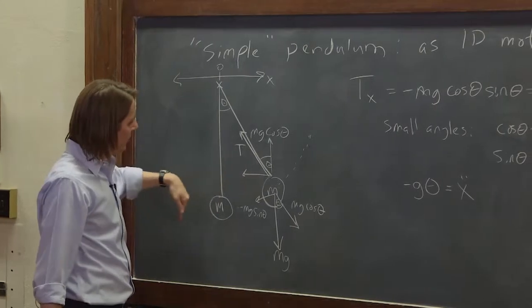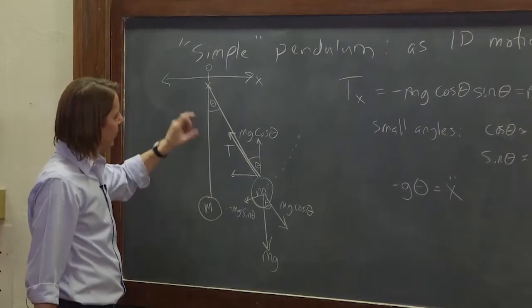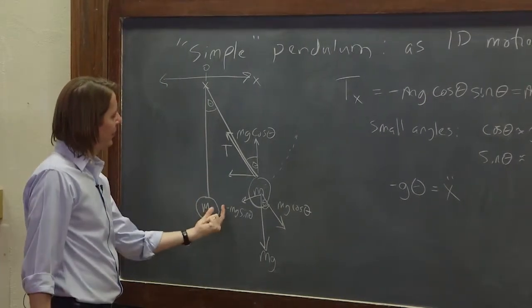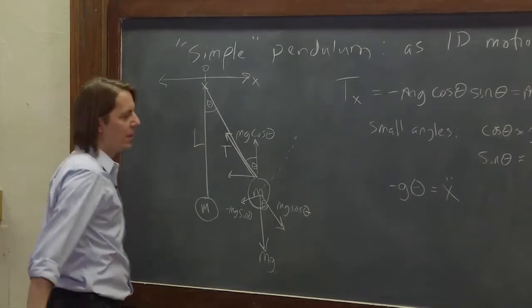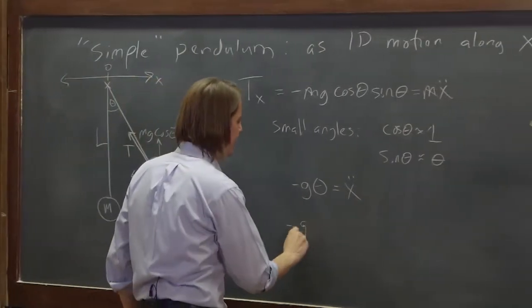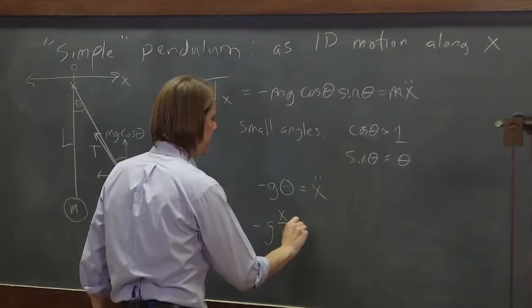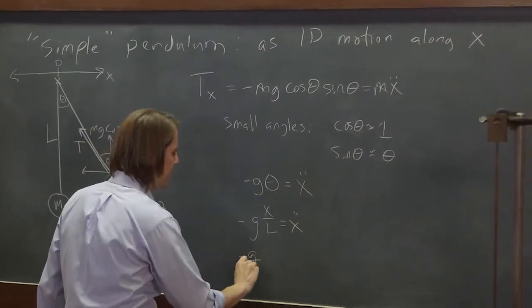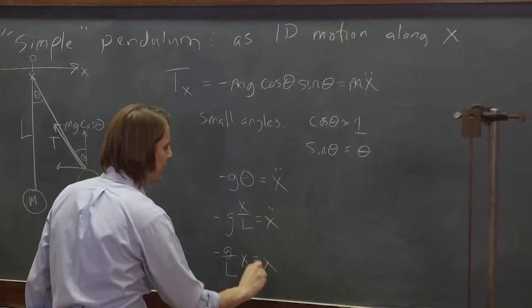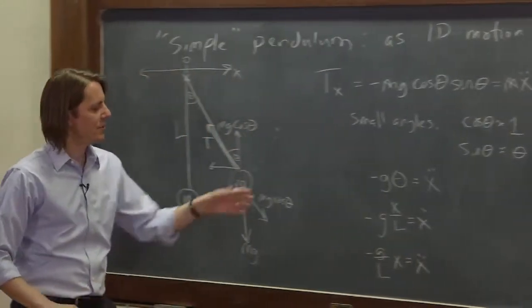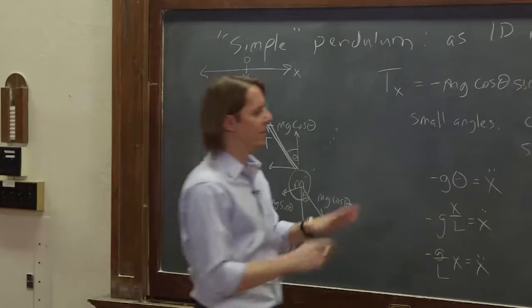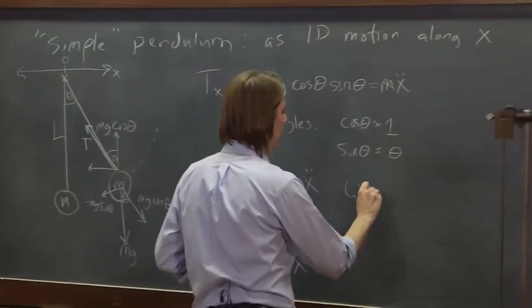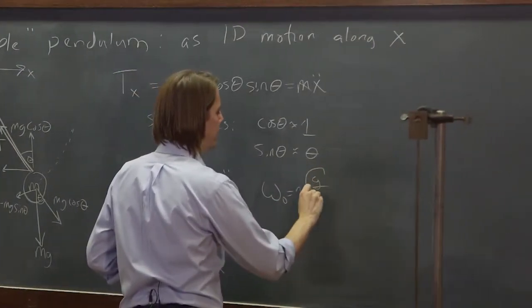So for small oscillations, theta is equal to this displacement x over the length. So you need the length of the pendulum l. So this gets us to minus g x over l equals x double dot, which of course leads us to the answer minus g over l x equals x double dot. And when you see that, you instantly know simple harmonic motion, and you instantly know that omega naught is the square root of g over l.